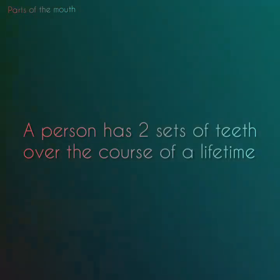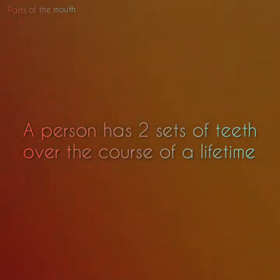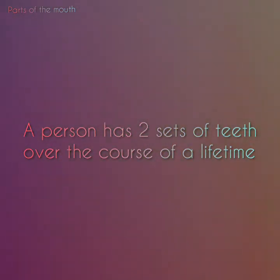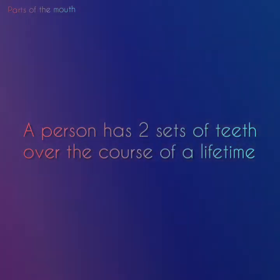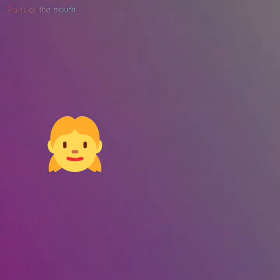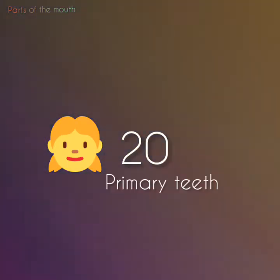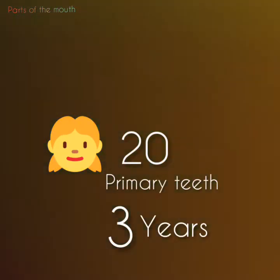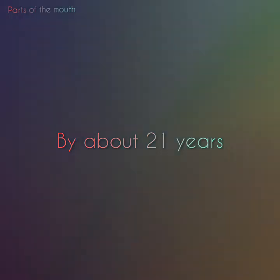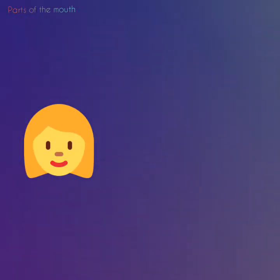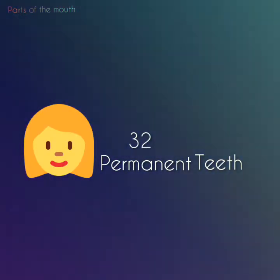A person has two sets of teeth over the course of a lifetime. The average child has their full set of 20 primary teeth by the age of three years. By about 21 years, the average person has 32 permanent teeth.